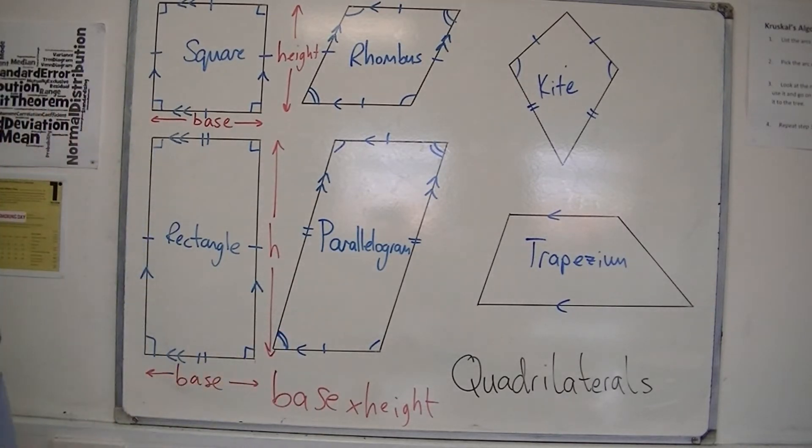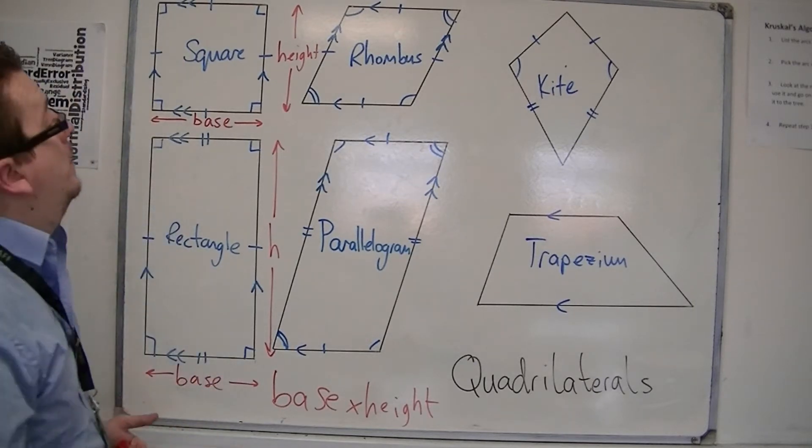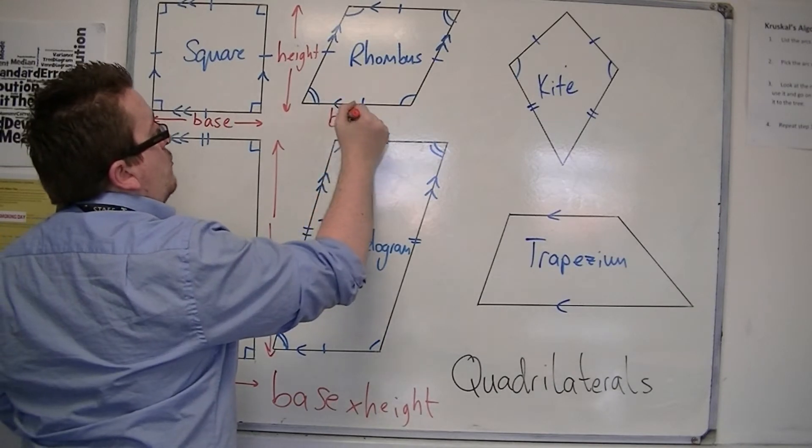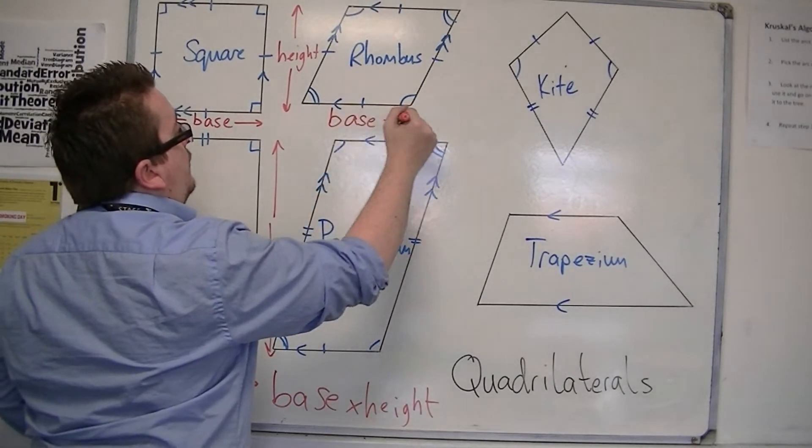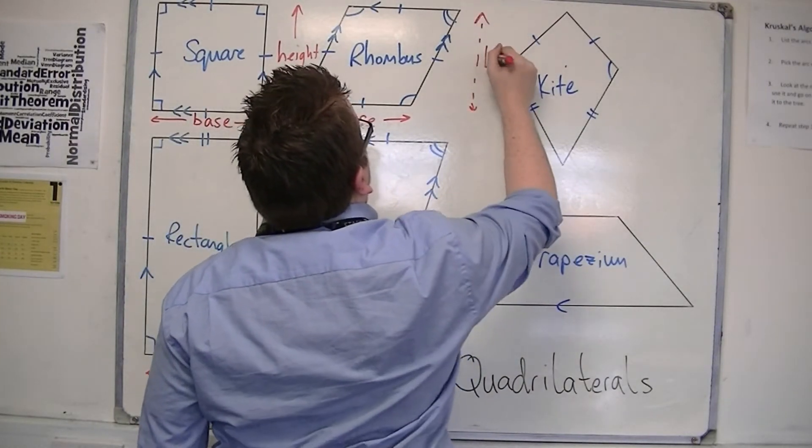And conveniently, which can be shown by cutting these shapes up, it is also exactly the same for the rhombus and the parallelogram. You have your base of the shape and you have its perpendicular height.